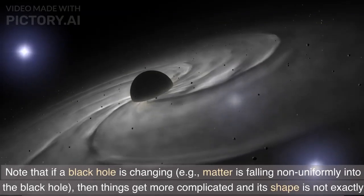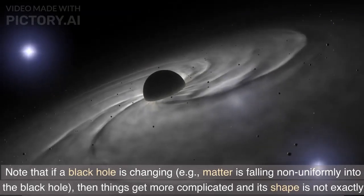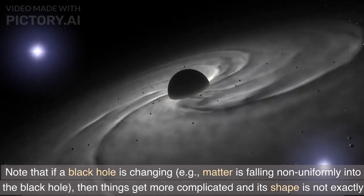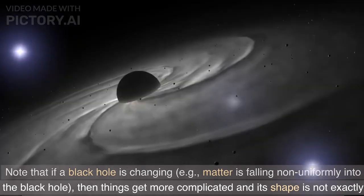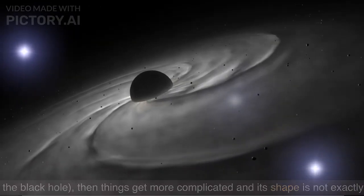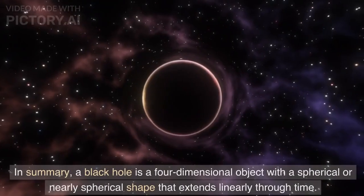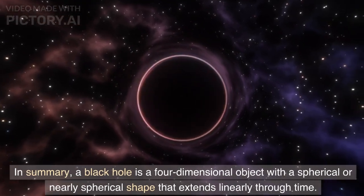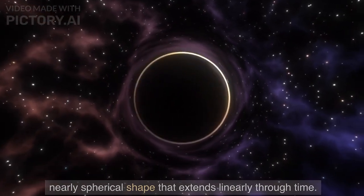Note that if a black hole is changing, e.g., matter is falling non-uniformly into the black hole, then things get more complicated and its shape is not exactly spherical, but these basic ideas still apply to a good approximation. In summary, a black hole is a four-dimensional object with a spherical or nearly spherical shape that extends linearly through time.